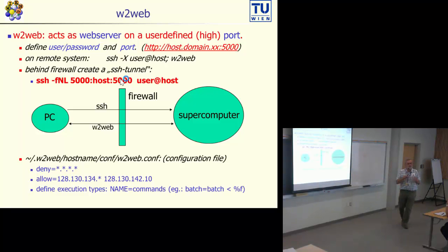You can also do it with pure Windows, with PuTTY or something like this. If you want to make Win2web even more secure than just username and password, you can put in the configuration file lines like deny star dot star dot star dot star. That means nobody is allowed to access the Win2web server, except a line with allow these specific IP addresses. Only from those addresses you are allowed to access Wien2K.